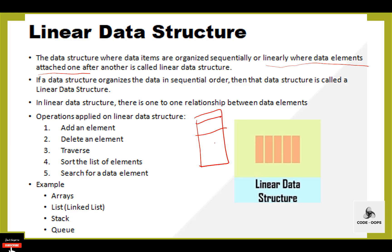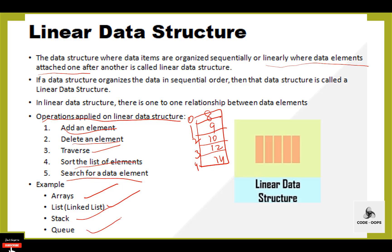For example, an array is a linear data structure in which elements are attached one after another. If the data structure organizes data in sequential order, then it is called a linear data structure. Operations performed on linear data structures include: add an element, delete an element, traverse, sort the list of elements, and search for data elements. The linear data structures are array, linked list, stack, and queue.